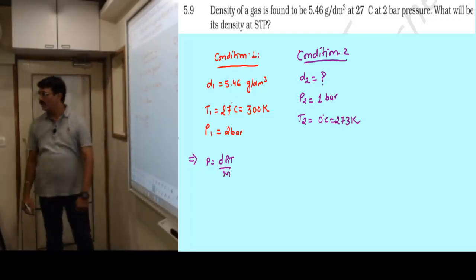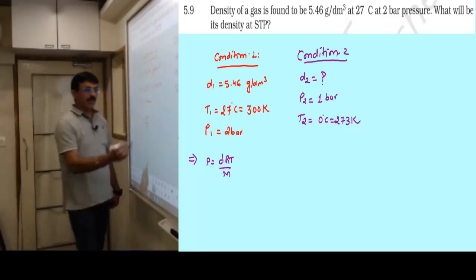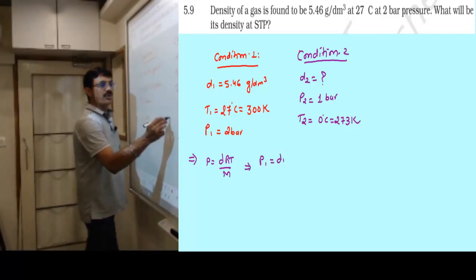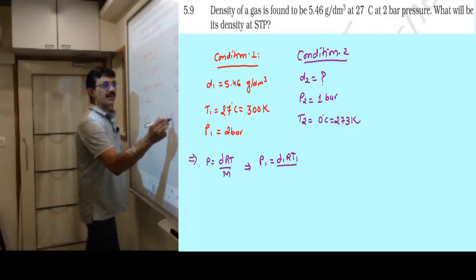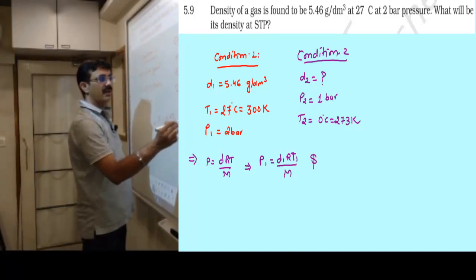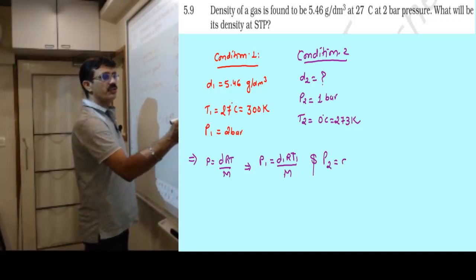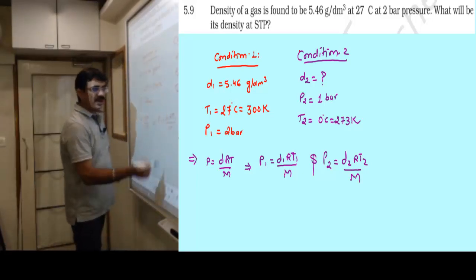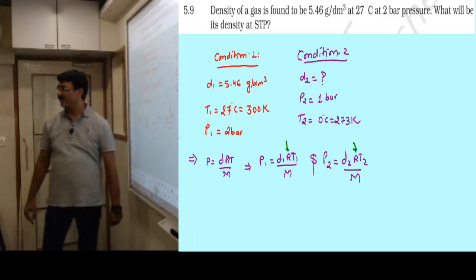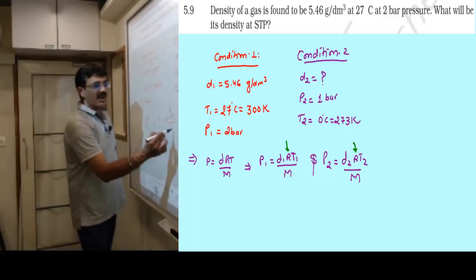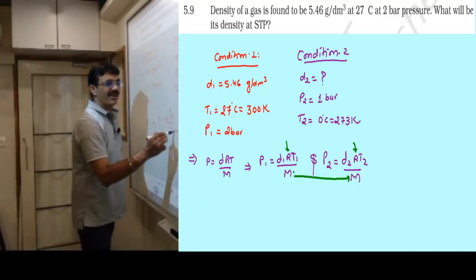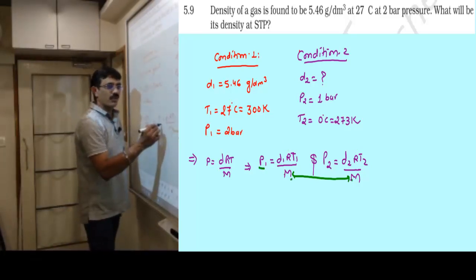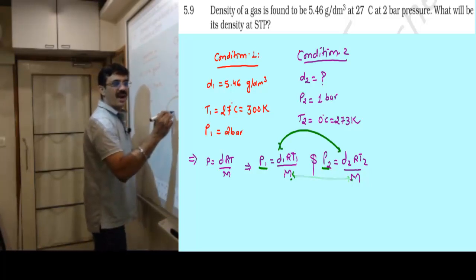We have the formula p equals DRT by M. In both conditions, R value remains same, it's a gas constant. Even molecular mass doesn't change because in both conditions the gas is the same. That's why I didn't write M1 M2. What is changing? Pressure, densities, and temperatures.